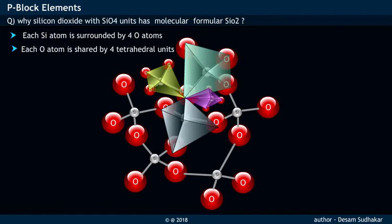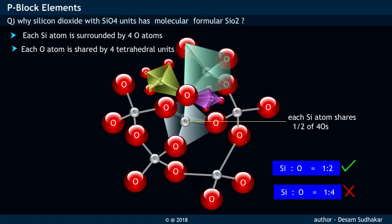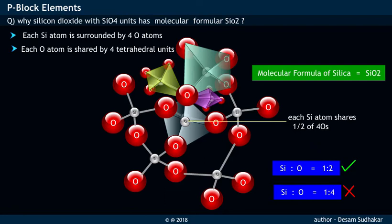Here, each of the four oxygen atoms in silica are shared by neighboring four SiO4 tetrahedral structures. This means that each silicon atom in silica shares only half of the four oxygens bonded to it. Due to this reason, the ratio of silicon to oxygen in silica structure should be one to two instead of one to four. Hence, the molecular formula of silica is SiO2 instead of SiO4.